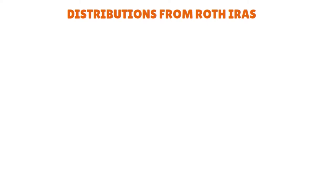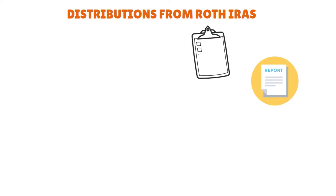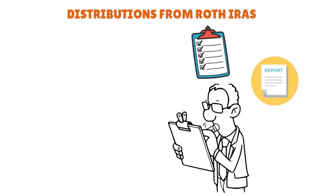Distributions from a Roth IRA are reported in Part 3 of Form 8606. If a distribution is a qualified distribution, it is not necessary to complete Form 8606. If a distribution from a Roth IRA is not qualified, Form 8606 must be completed to determine whether any portion of the Roth IRA distribution is taxable and also subject to the 10% early distribution penalty.